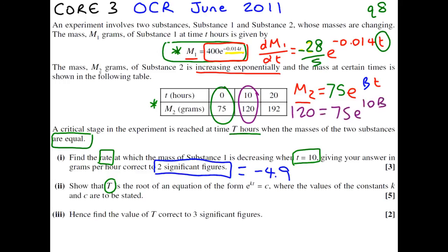We want to solve this to find the value of the unknown b. We divide by 75 on both sides to get the answer of 8 over 5. We now take ln of both sides. ln of 8 over 5 is 0.47, etc.